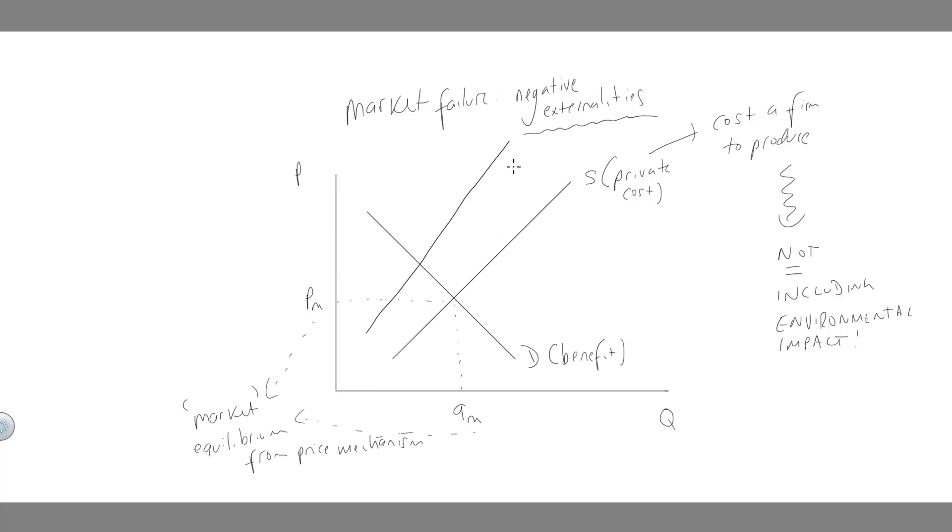Okay, it's not terrible. So what we can say here is that this S, this new curve, is not the private cost, but in effect this is going to be the social cost.